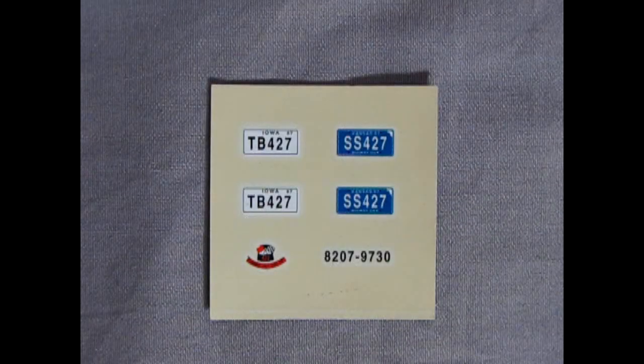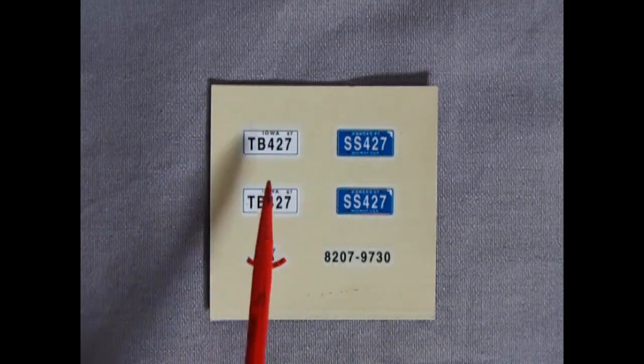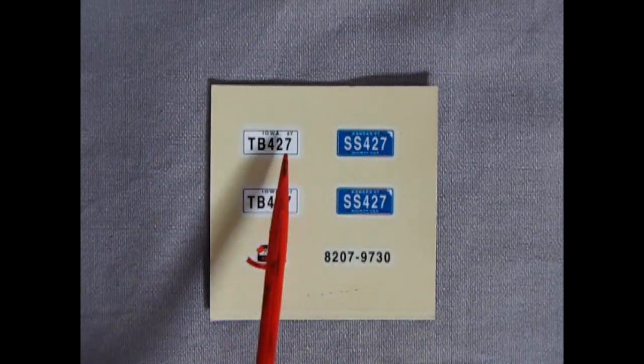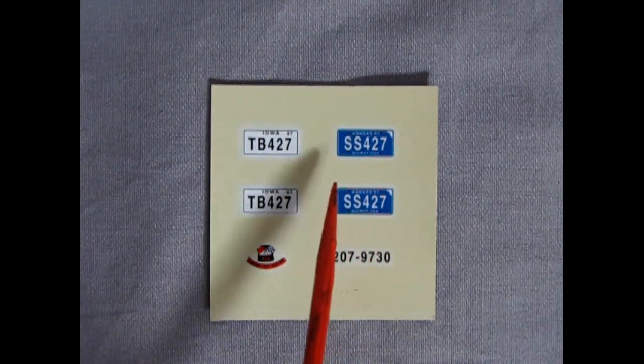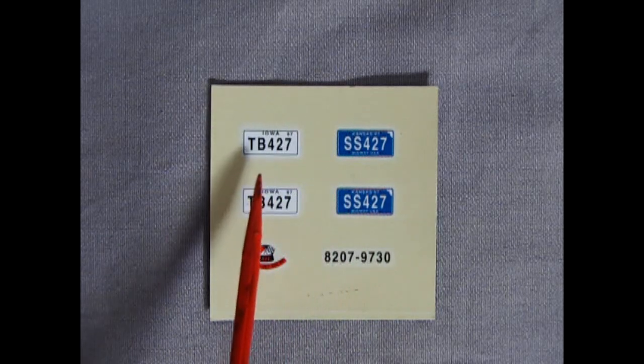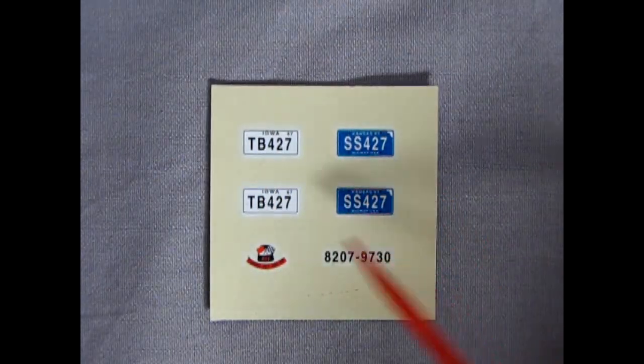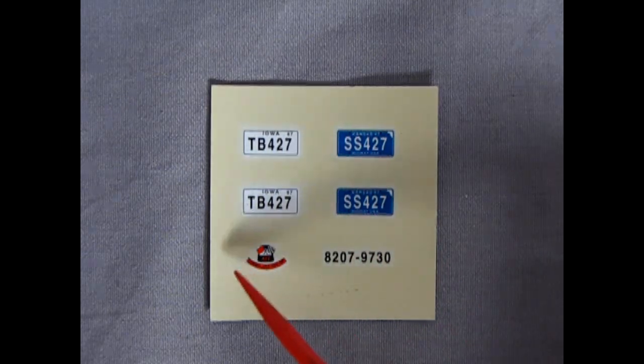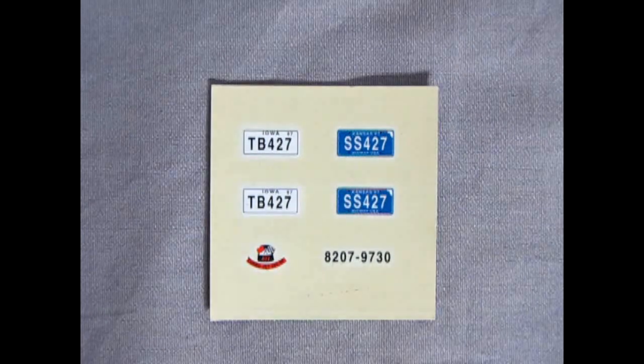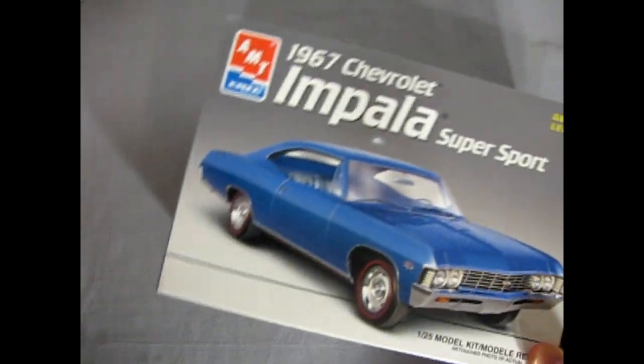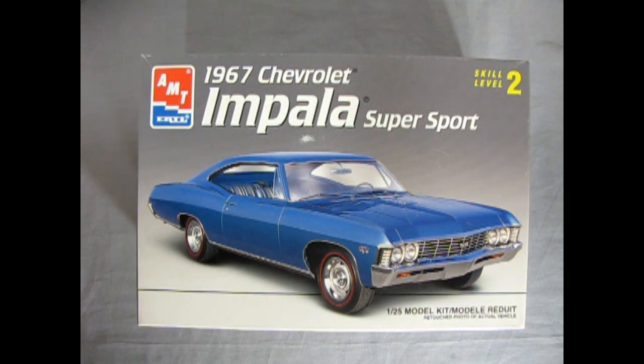And here's the final bit of our model kit. Of course, I'm referring to the decal sheet. And you get two wonderful license plates from Iowa from 1967, and Kansas from 1967 as well. One is SS-427. The other is TB-427. The 427 of course referring to the engine. And here's the air cleaner decal for your 427 right there. And that completes our look at the AMT Ertl 67 Chevrolet Impala Supersport model kit.